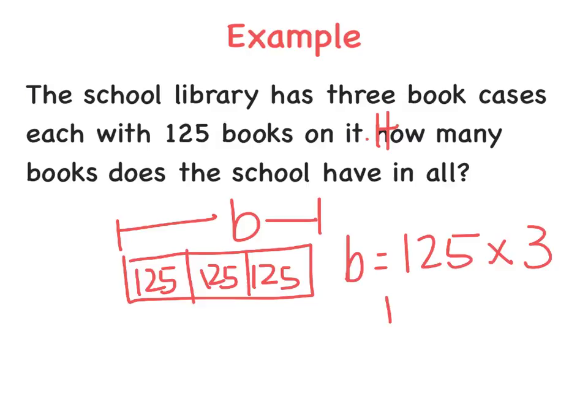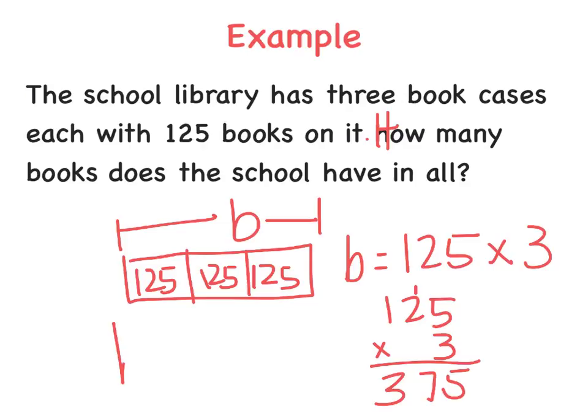Now I can stack this and solve. 5 times 3 is 15. 3 times 2 is 6, plus 1 is 7. And 3 times 1 is 3. So B equals 375 — there are 375 books in all.